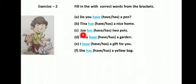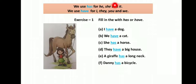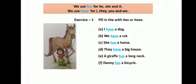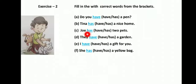Next — Joe dash two pets. Joe boy है, so he use होगा, और he के साथ has use होगा। Joe has two pets. Next — they dash a garden. They के साथ have use होगा। They have a garden.